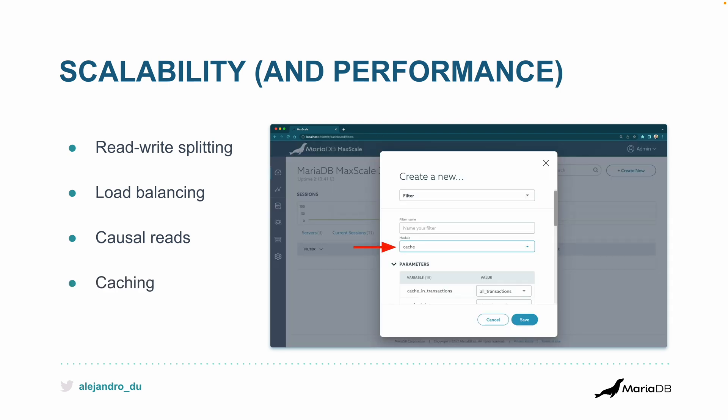Caching — your application runs a query all the time and the data doesn't change; that's a good candidate for caching that query. You cache the results by configuring it there. The module is called 'cache' and you can configure a bunch of things there. Done — it doesn't need to go to the actual database nodes to return the results, so it gets faster.